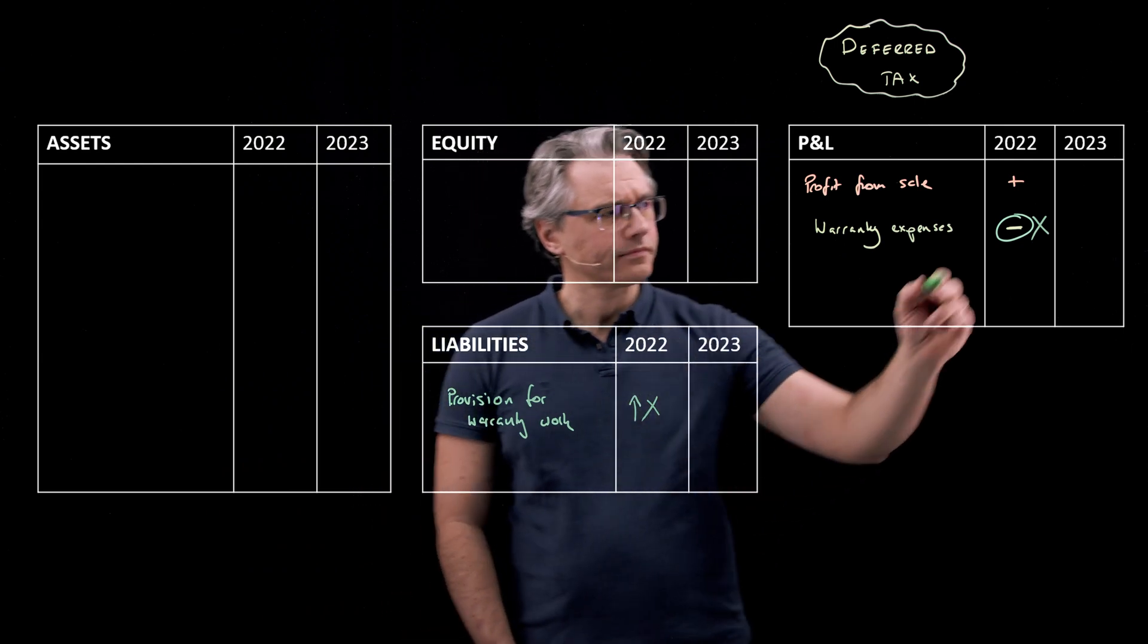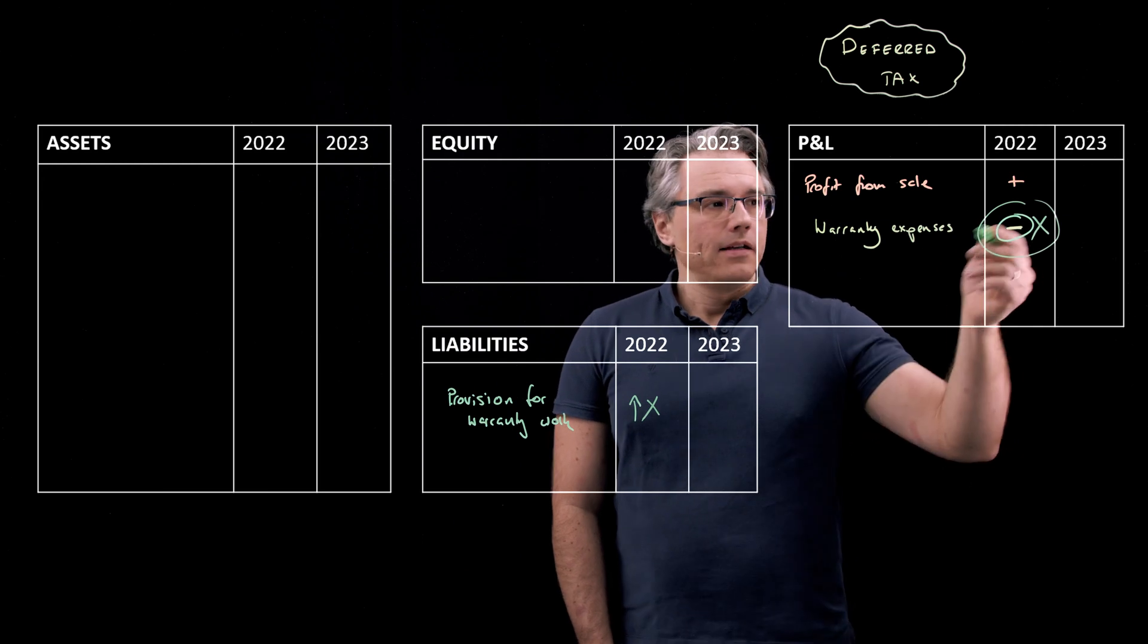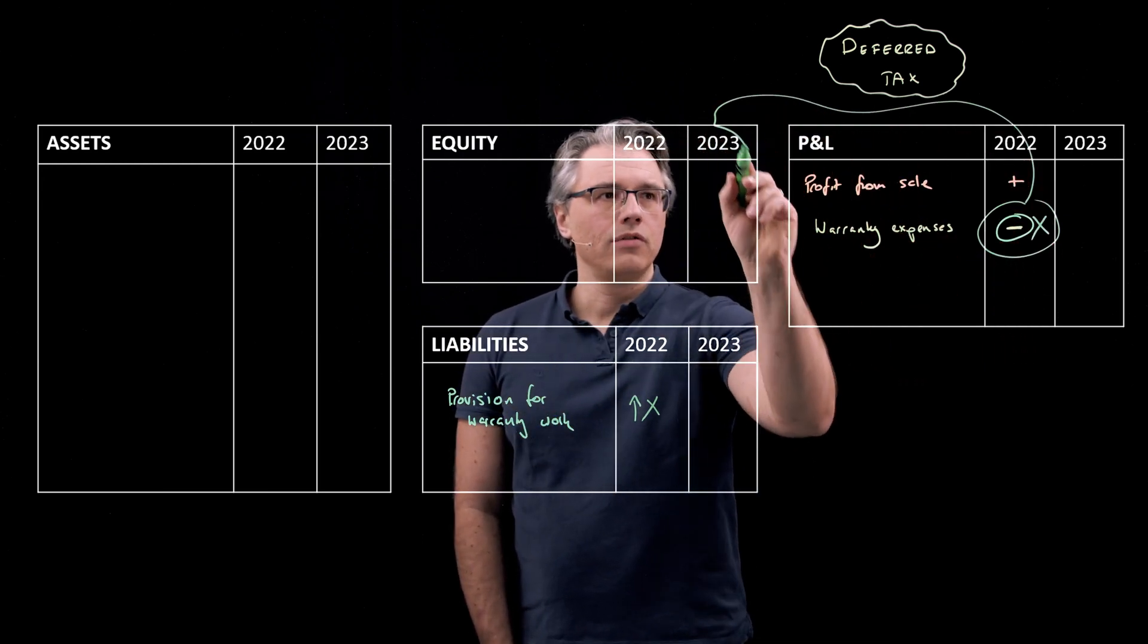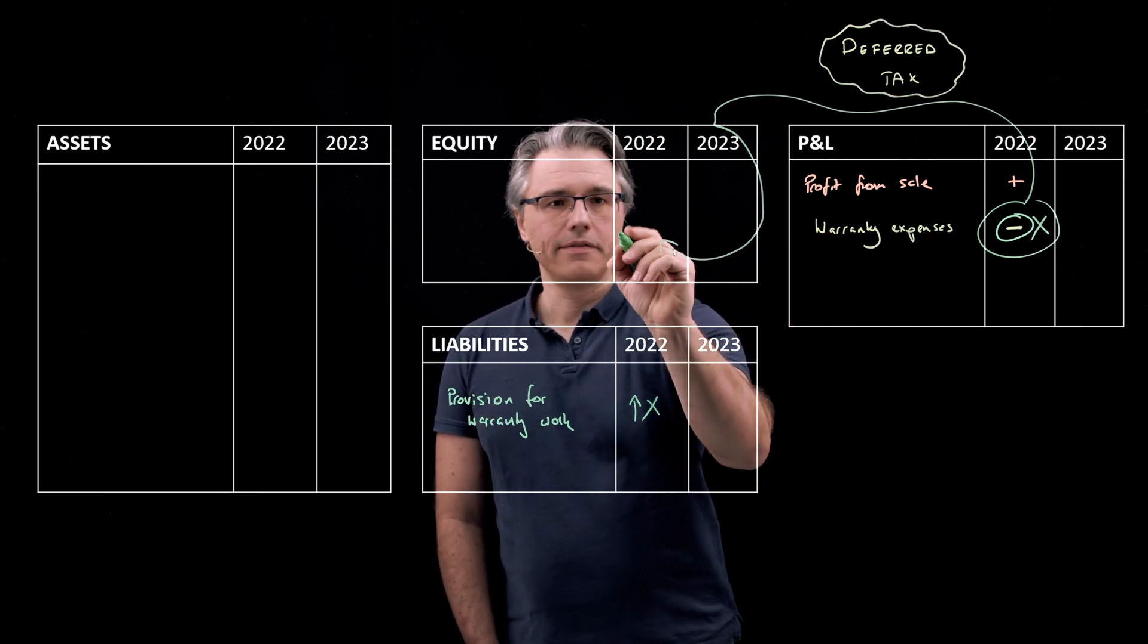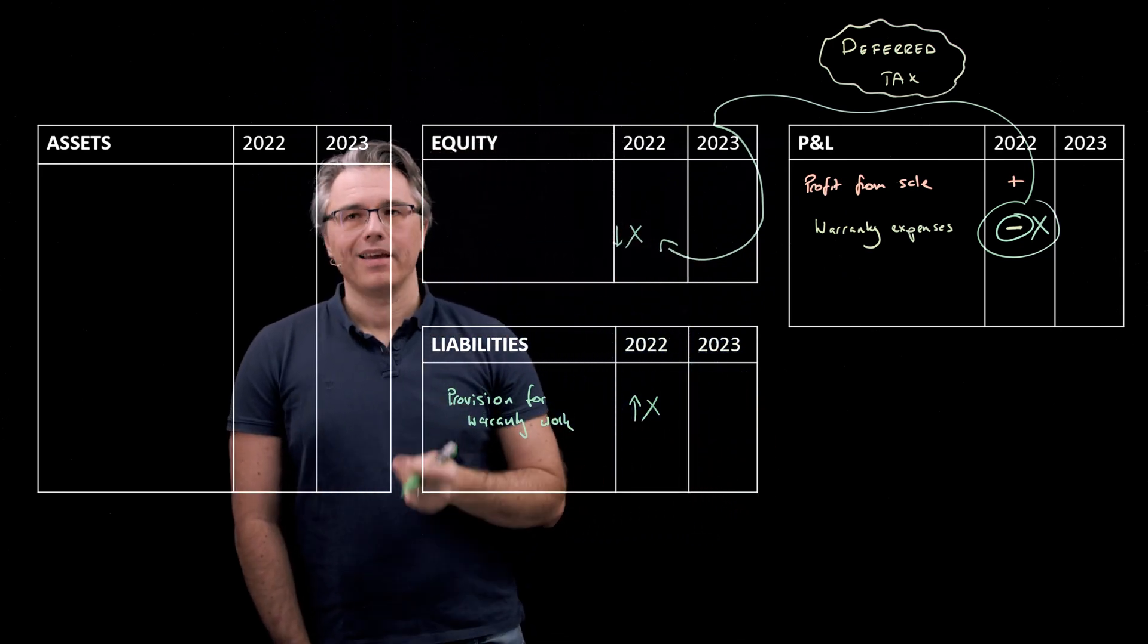And as you will know, ultimately, whatever we do to the P&L, in this case, it's something negative, will have an impact on our equity over here. So whatever we did here will have a downward impact on our retained earnings within equity.